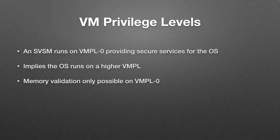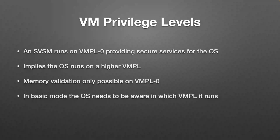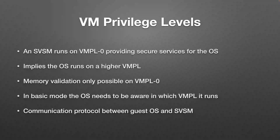One implication is that memory validation via the PVALIDATE instruction can only be executed at VMPL0 — on higher VMPLs this causes an exception. So the guest OS needs to be aware it's not running at VMPL0. Current SEV-SNP guest code in Linux assumes VMPL0 and tries to do validation itself, so additional enablement is necessary to make it aware it's running at a higher VMPL. There is also a communication protocol between the guest OS and the SVSM via shared memory pages.